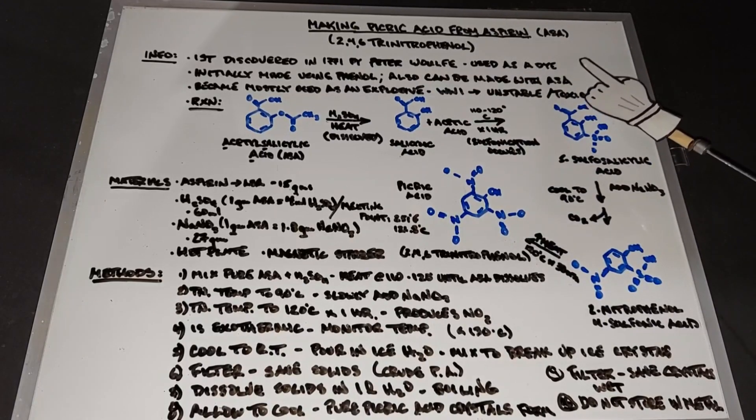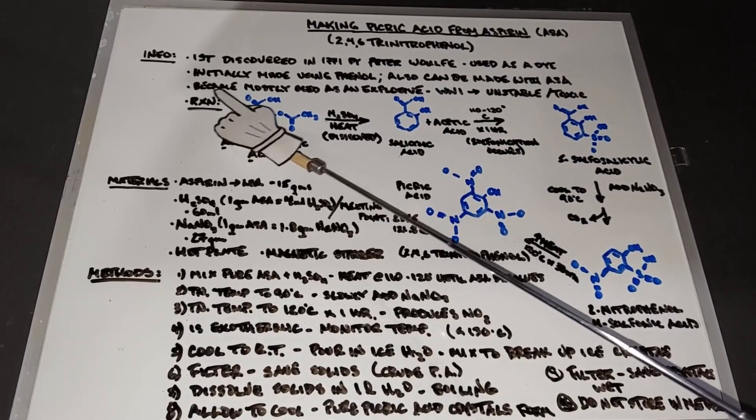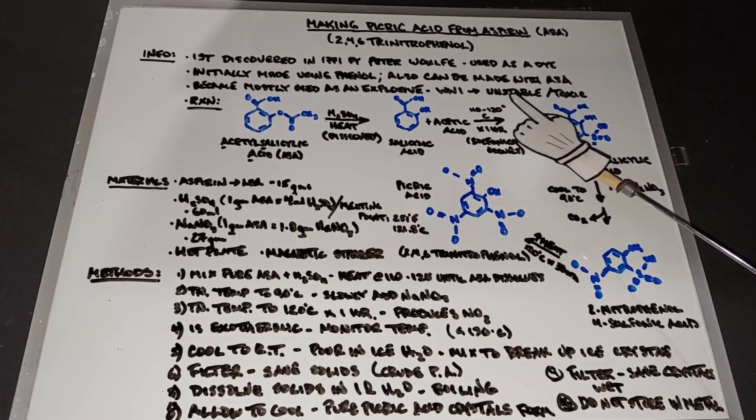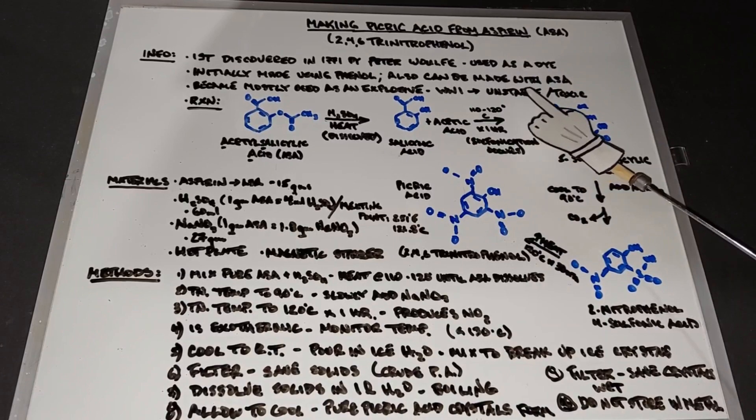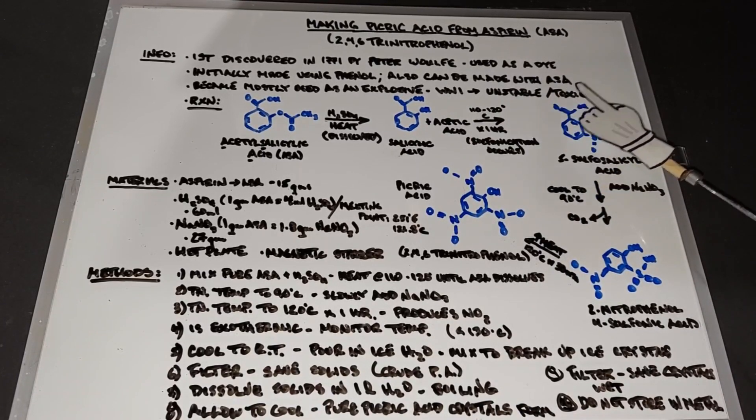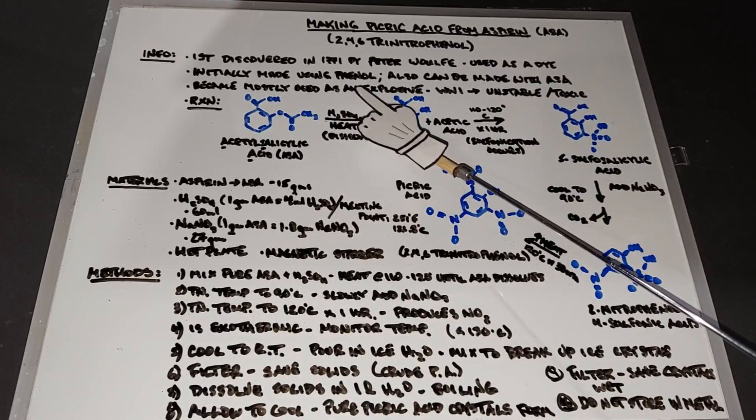But aspirin works also. From a dye, it became mostly used as an explosive, especially in World War I. But it was found that when it combines with metals, it becomes unstable and explosive. It's also toxic to touch or leave on your skin, so it eventually fell out of favor for TNT.